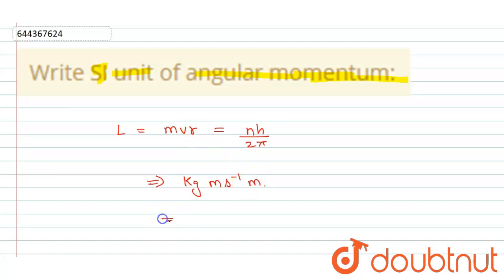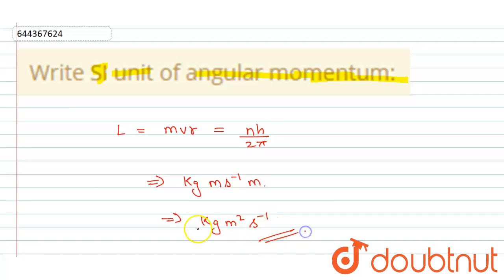So, we conclude that the SI unit of angular momentum is kg·meter² per second.